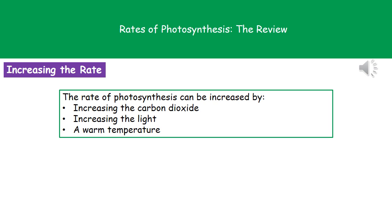There are three ways we need to remember that we can increase the rate of photosynthesis. The first one is that we can increase the amount of carbon dioxide present. The second one is we can increase the amount of light present. And the third one is we can have a warm temperature.